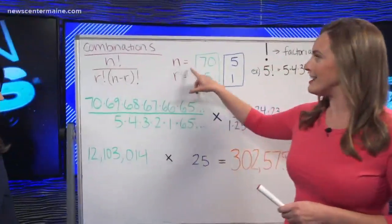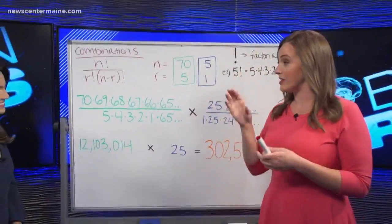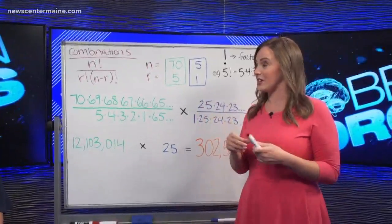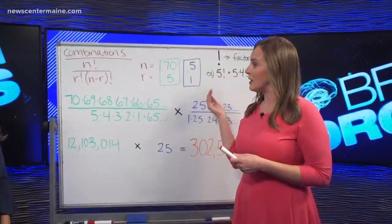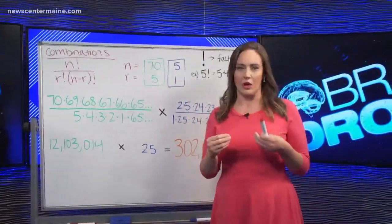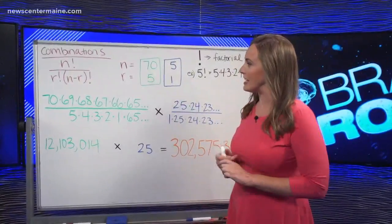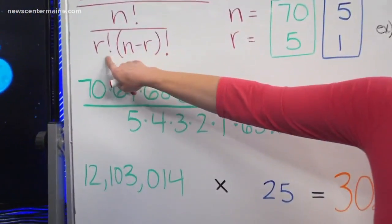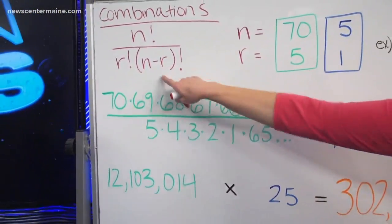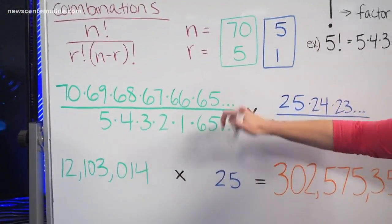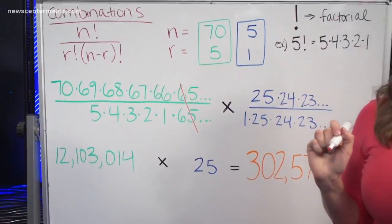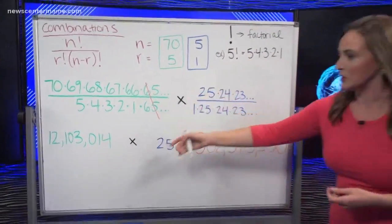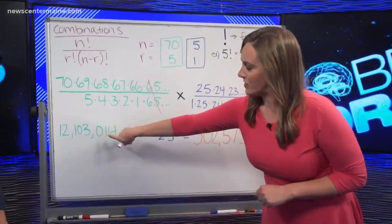So here's the factorial. N is the number that you have to choose from. So each number in the lottery, it could be one to 70, and R is the number of balls they're going to pick out out of those 70. So if we have 70 factorial divided by 5 factorial times the difference between the two, we can cancel the 65 factorials and simply multiply to get 12,103,014.